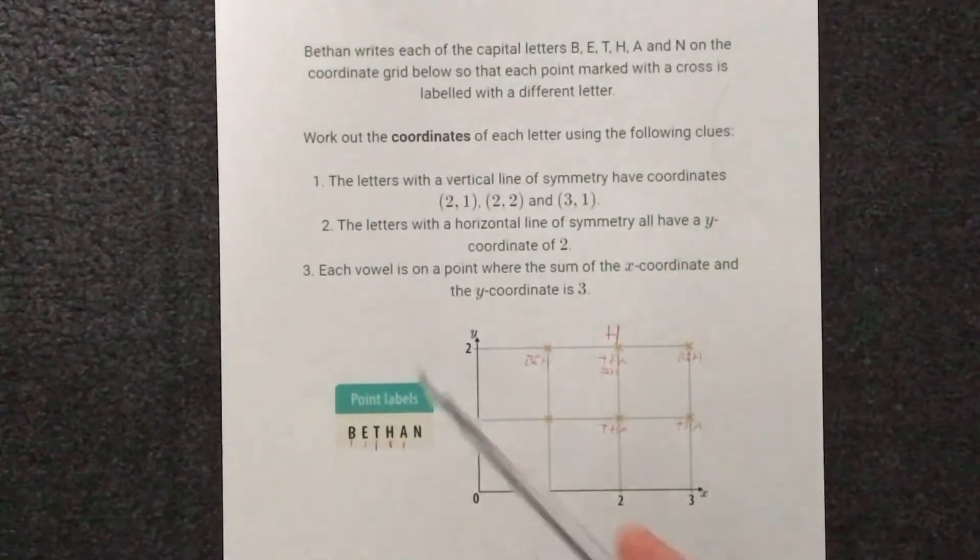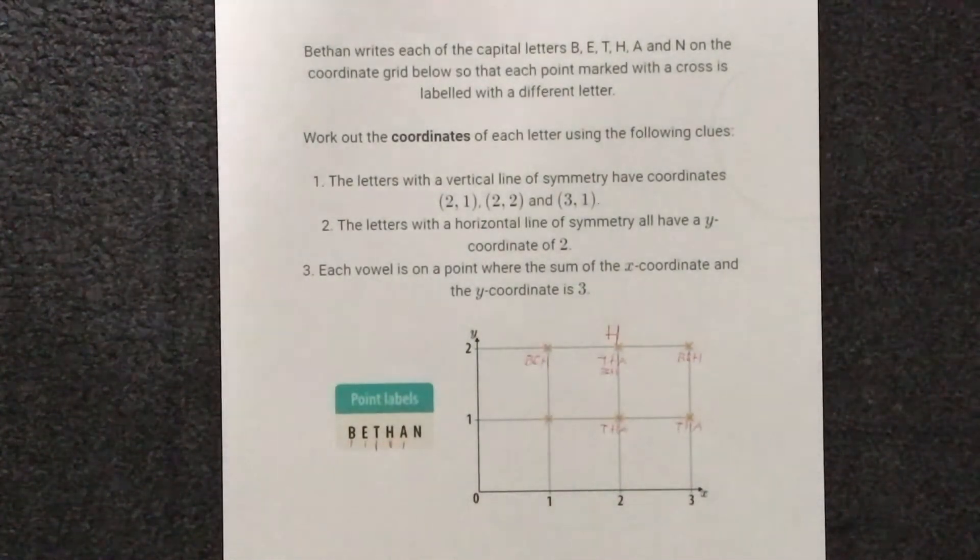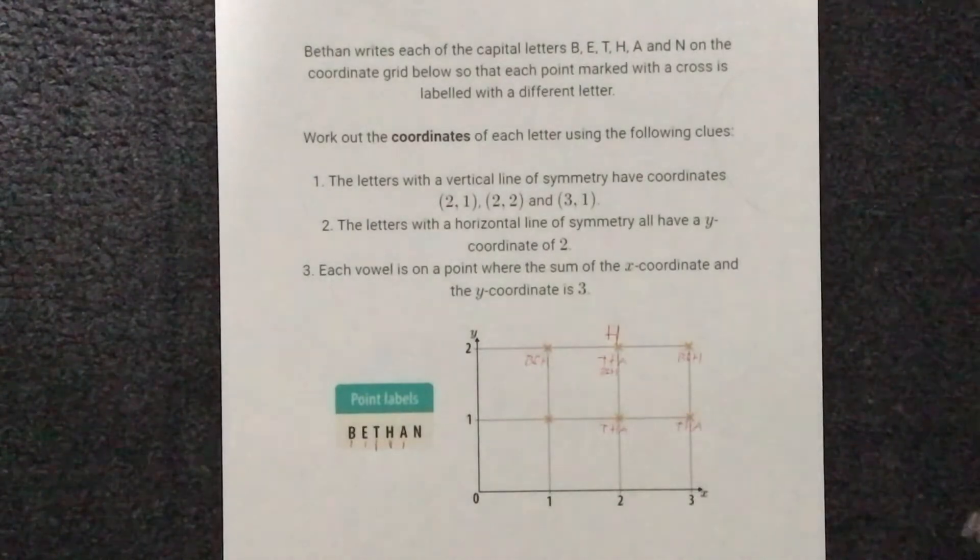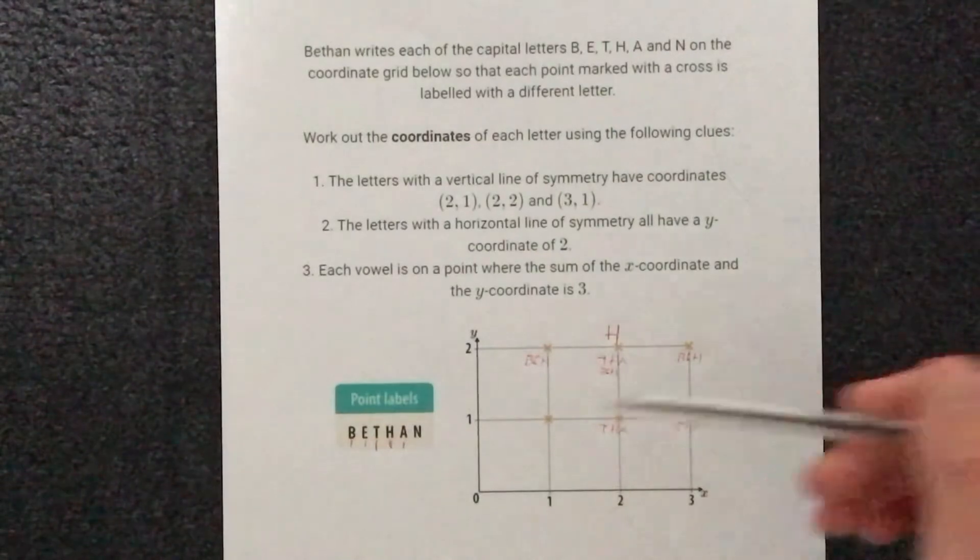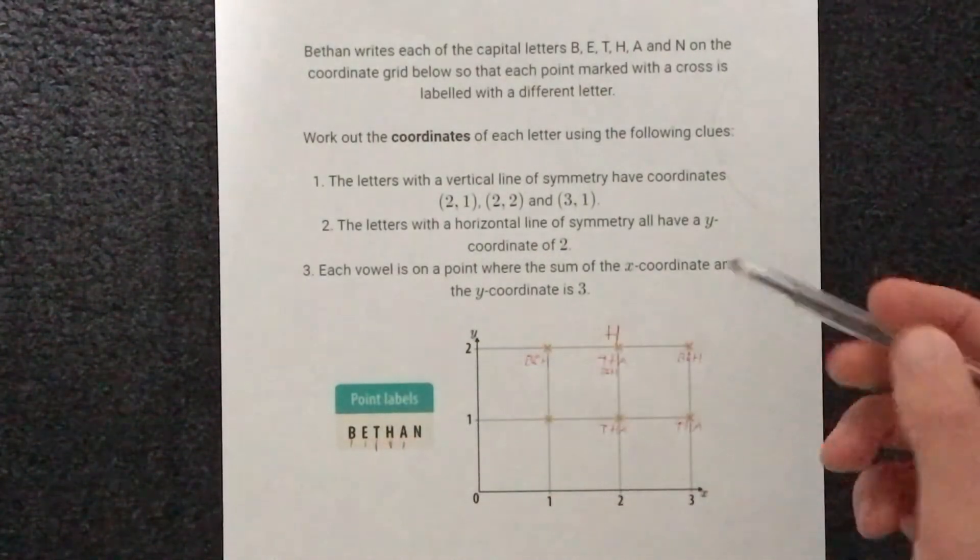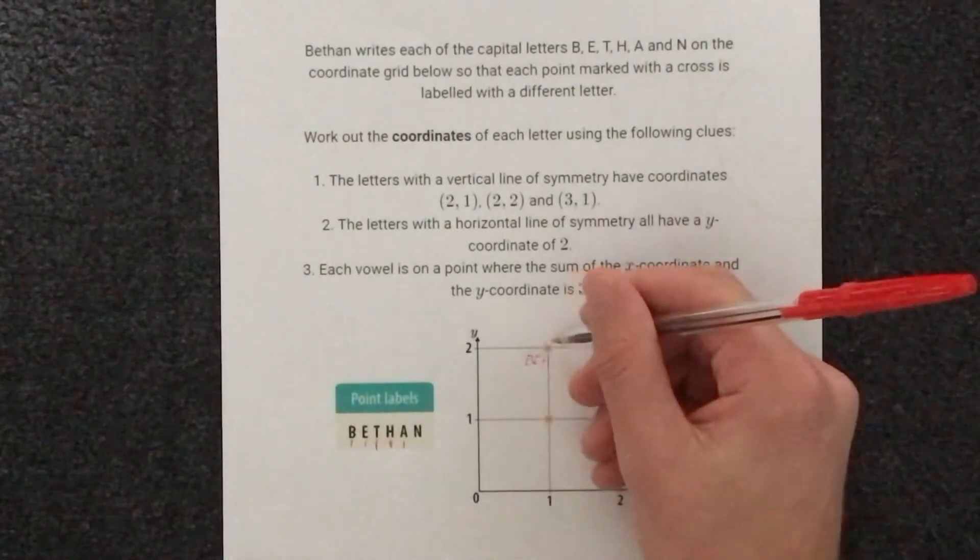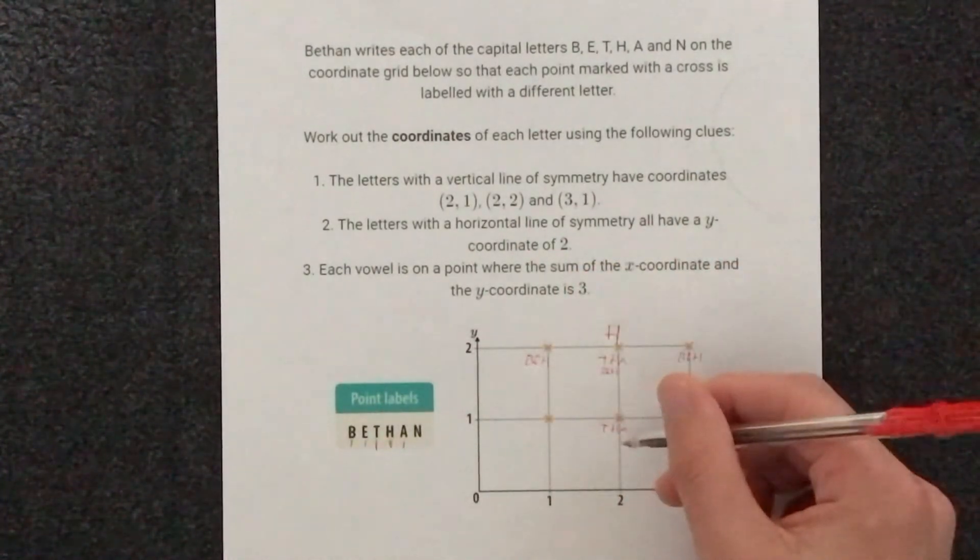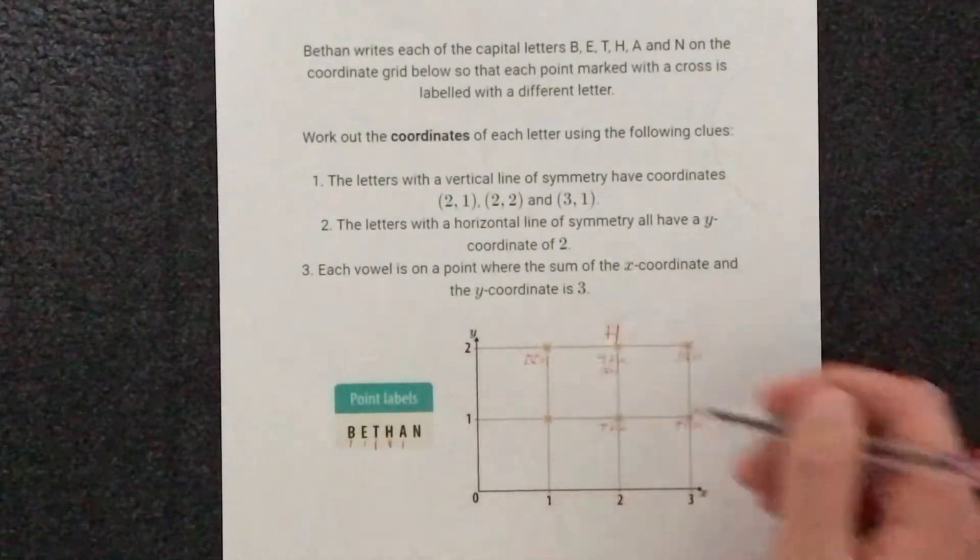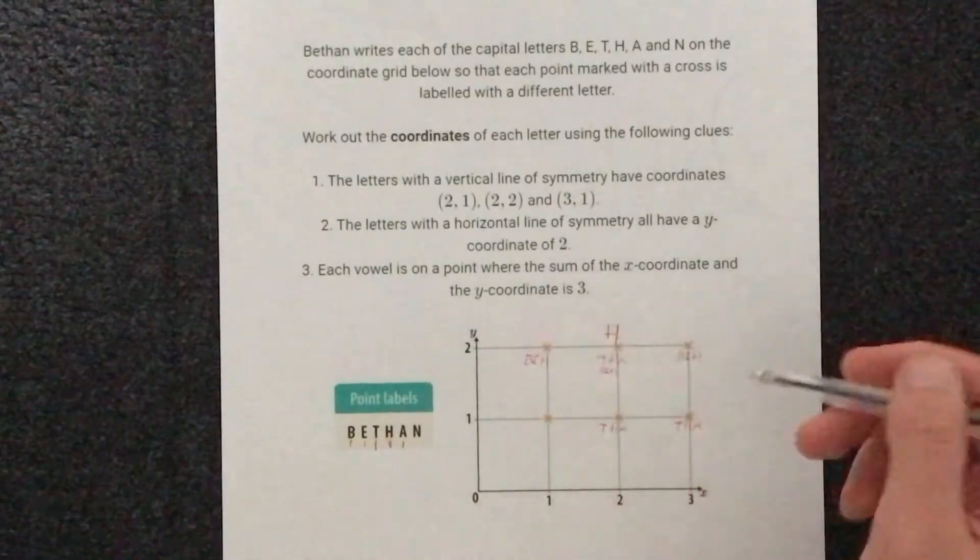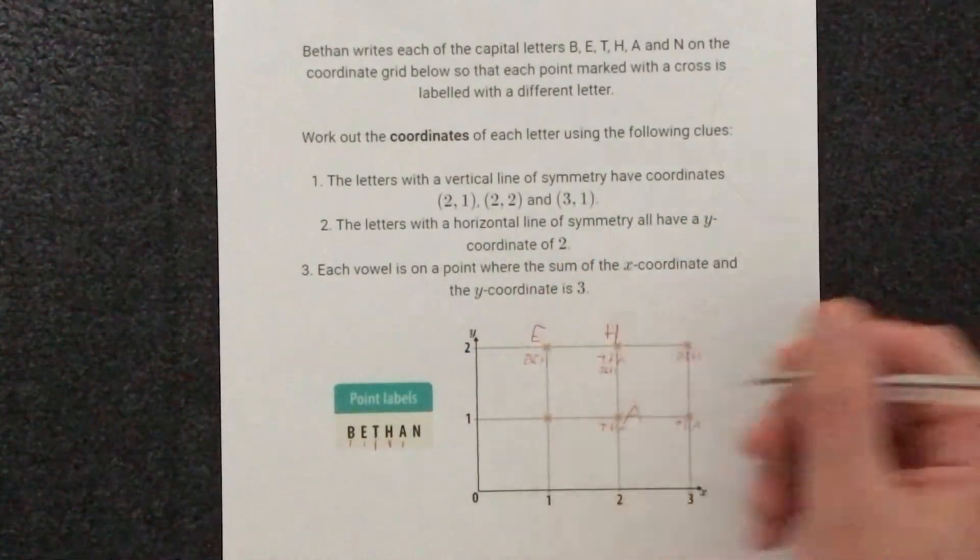We're finally told that each vowel is on a point where the sum of the x-coordinate and the y-coordinate is 3. So that means they could either be at (1,2) or (2,1). And the two vowels we've got are E and A. So at (1,2) we could have E or A, and at (2,1) we could have E or A. Well we've seen already that A can go here and E can go here. So this one must be E and this one must be A.